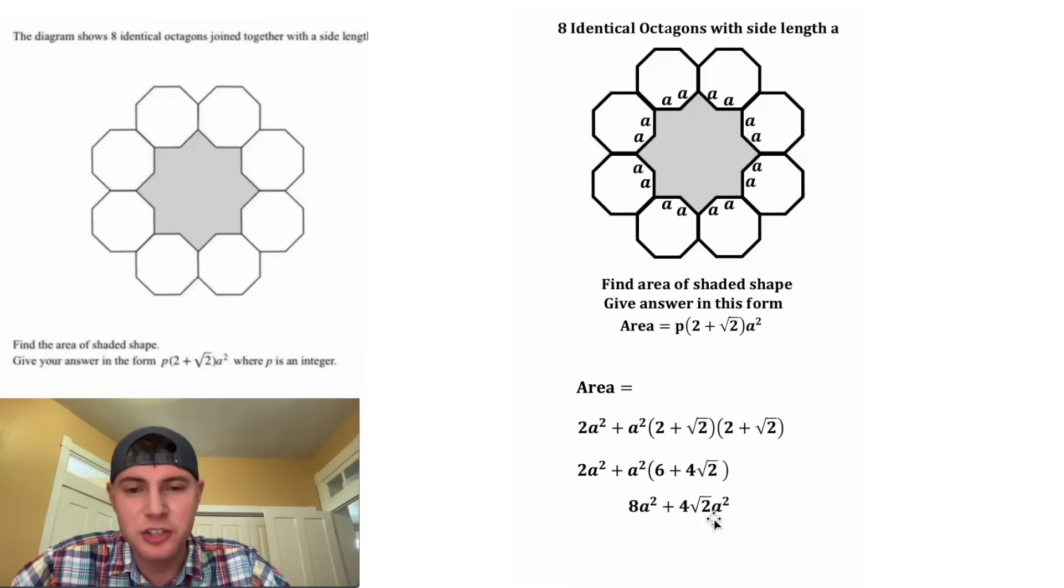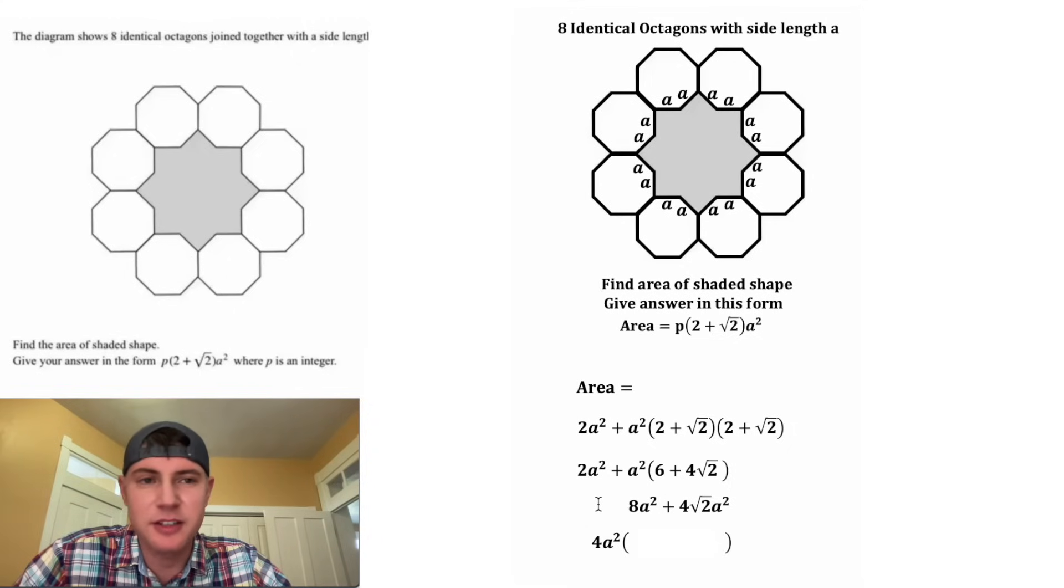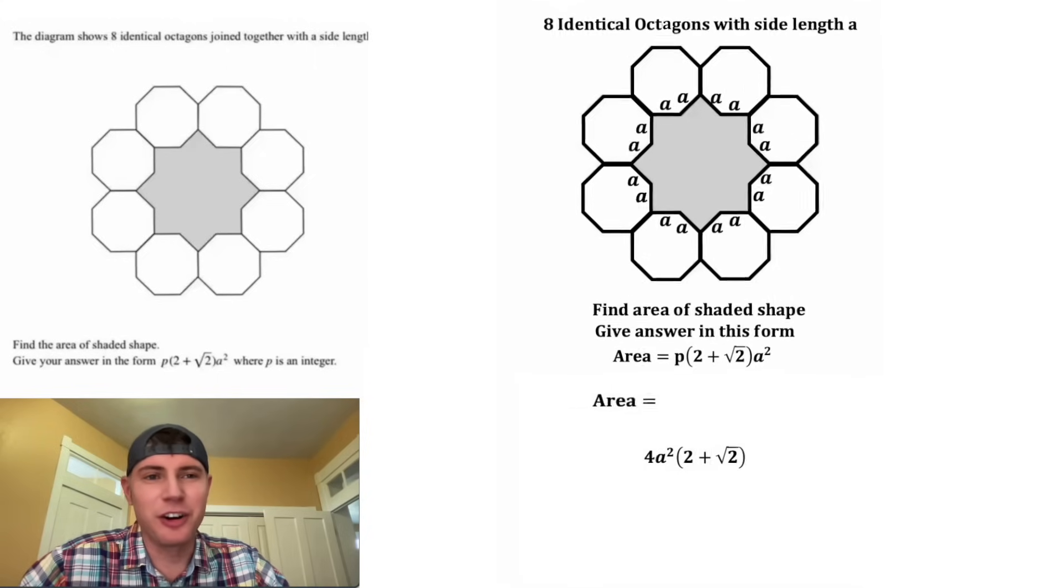Next, we can look at both of these terms, and they have a greatest common factor. It's equal to 4A squared. So 4A squared times what gives us this? Well, that's 2, plus 4A squared times what gives us this? Well, that's going to be root 2. So we end up with 4A squared times the quantity 2 plus square root of 2. And that is the answer for our area.